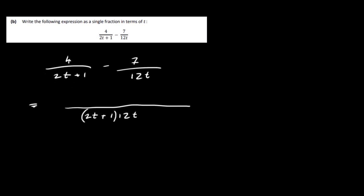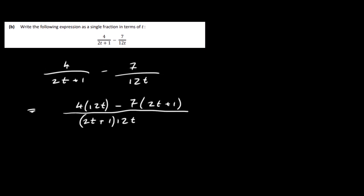So let's see, what do we do to 2t plus 1 to turn it into this here? Well, we multiply by 12t, so we multiply the top by 12t. Write down the minus. What do we do to 12t to turn it into this? We multiply by 2t plus 1, so we multiply the top by 2t plus 1. Okay, so let's multiply this out.